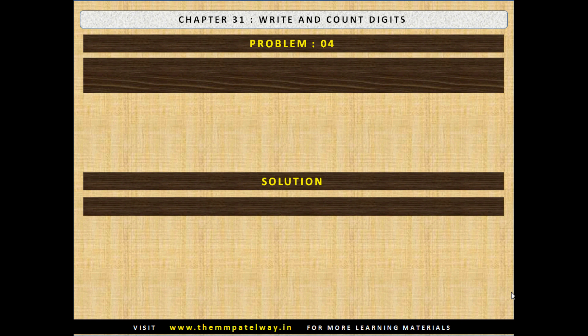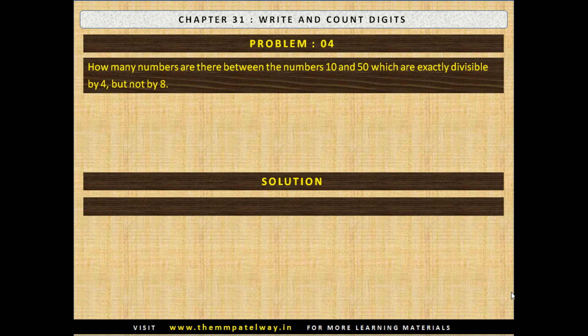Problem No. 4: How many numbers are there between 10 and 50 which are exactly divisible by 4 but not by 8? Now stop the video and find the solution. The solution follows: there are 5 such numbers.